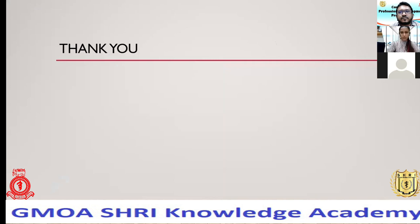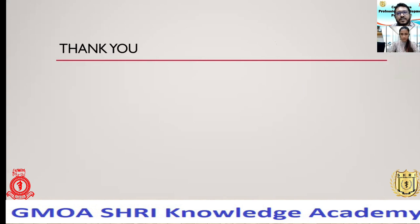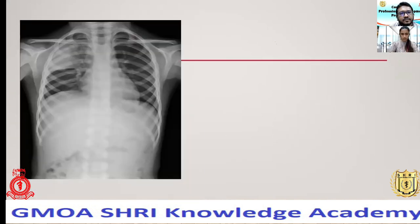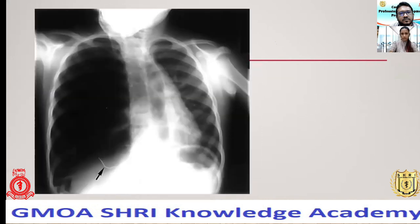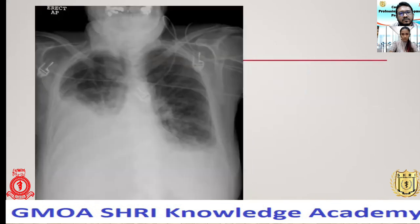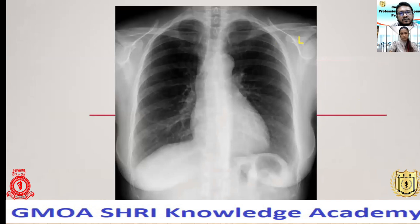Thank you very much sir for that very informative presentation. It's time to answer some queries — please write your questions clearly in the chat box. Question: how to identify pleural effusion? Pleural effusion is quite easy — look at both costophrenic angles. Normally they are very sharp and deep. If there is any blunting, you have to suspect a pleural effusion. If you're not sure, you can always do a lateral decubitus to see whether there's any fluid level.